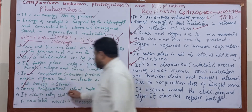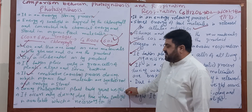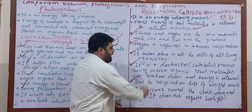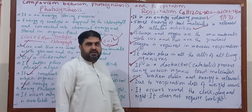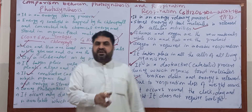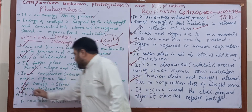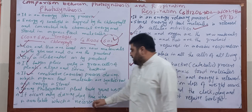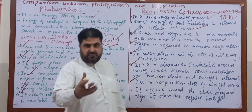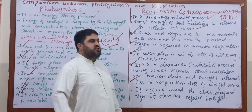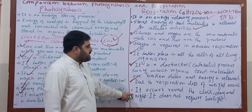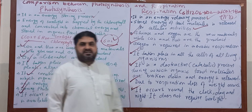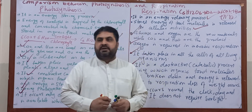During photosynthesis, a plant body gains weight because glucose is being made. Due to respiration, there is a loss of glucose through degradation. Photosynthesis occurs only during daytime when sunlight is available, while respiration occurs around the clock — day and night — and does not require sunlight.